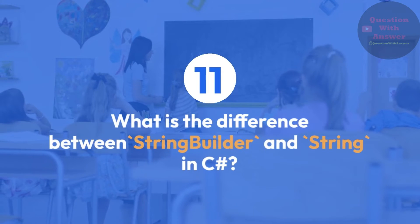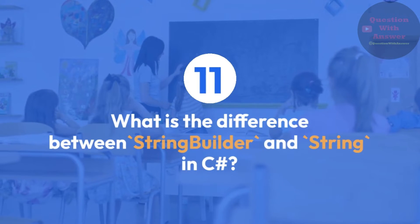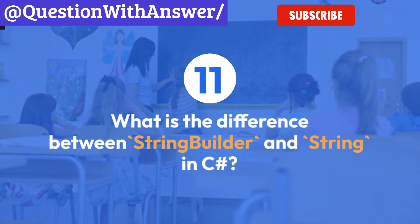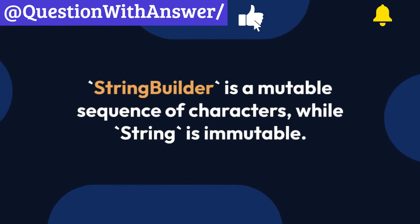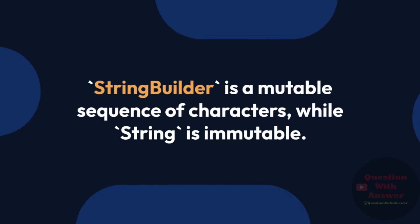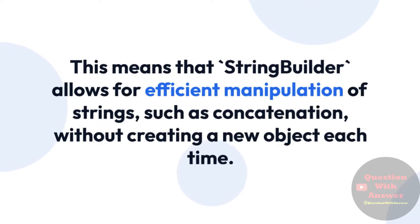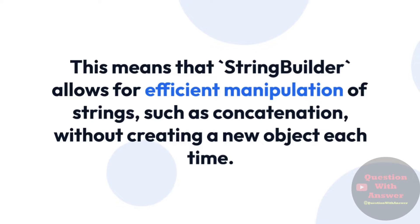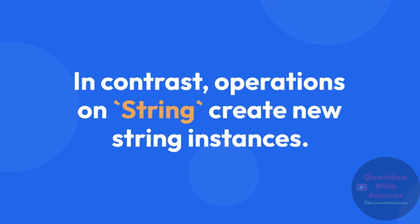Question 11: What is the difference between StringBuilder and String in C#? Answer: StringBuilder is a mutable sequence of characters, while String is immutable. This means that StringBuilder allows for efficient manipulation of strings, such as concatenation, without creating a new object each time. In contrast, operations on String create new String instances.